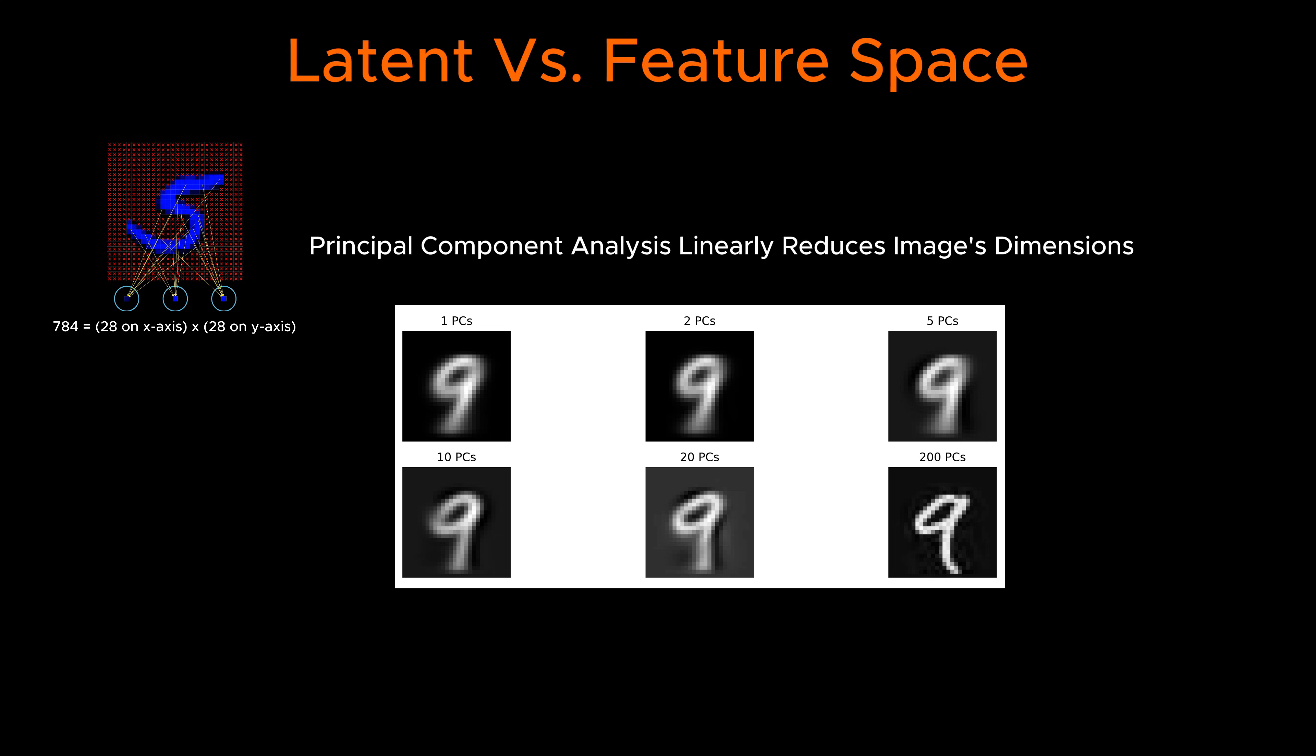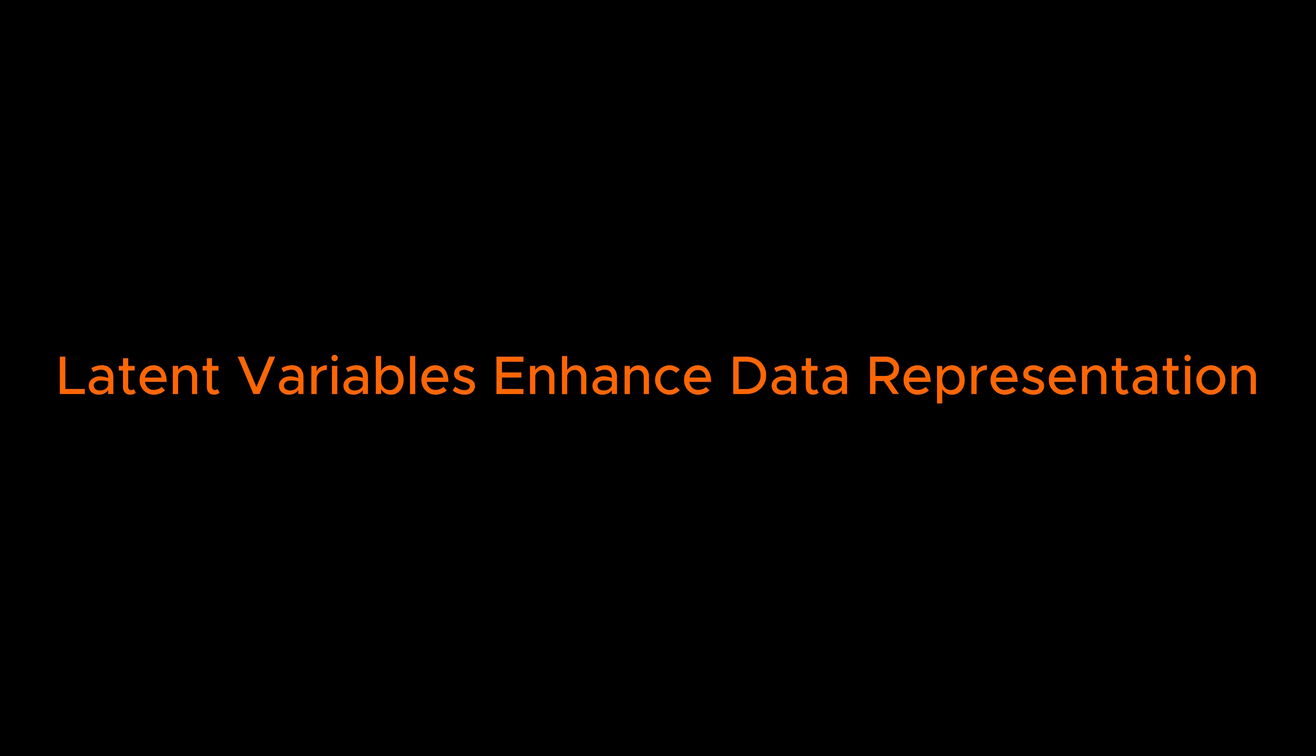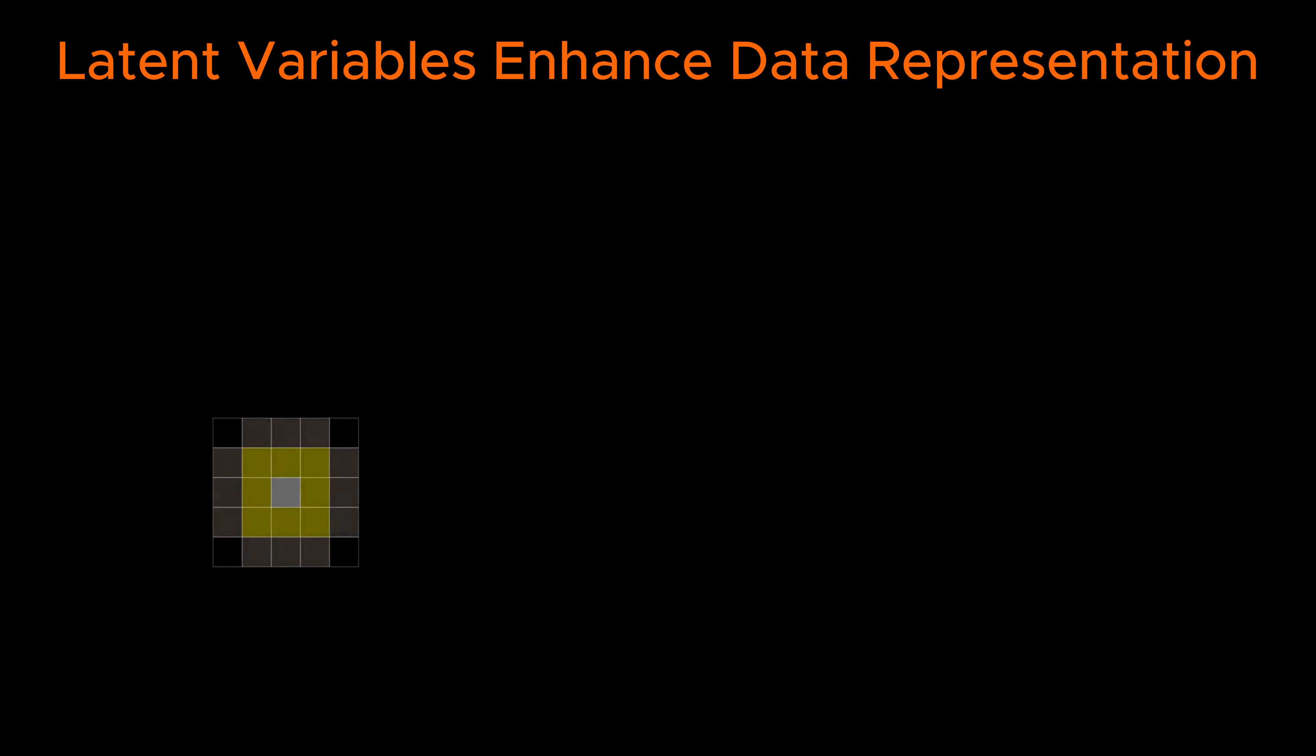In a method like Principal Component Analysis, or PCA, the latent variables are linear combinations of the feature variables, which in this case are the pixels of the images. In other techniques like autoencoders, which we described shortly, latent variables are built out of nonlinear combinations of important pixels. Beyond compression, latent variables are more meaningful representations of data.